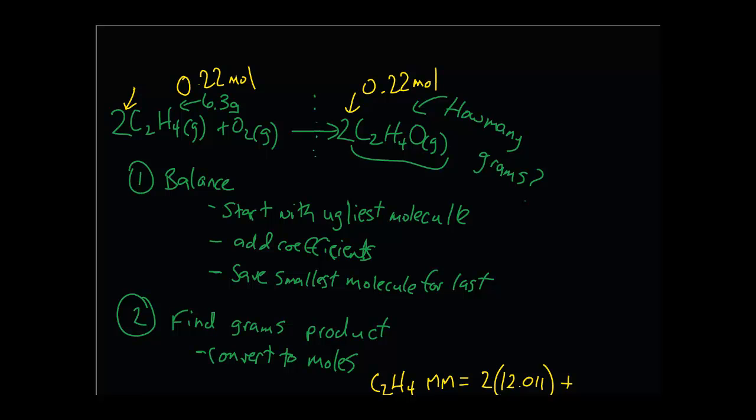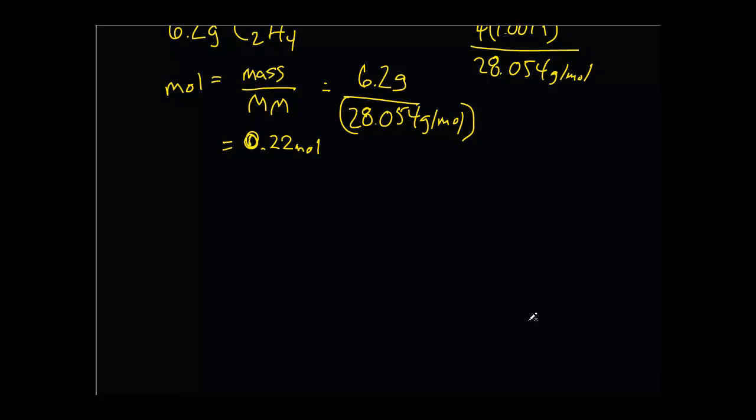So if we have 0.22 moles of C2H4O, how many grams is that? Well, we know that mole equals mass or grams over molar mass. But now we want to solve for mass because we have the moles this time.